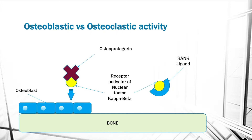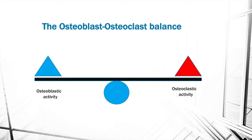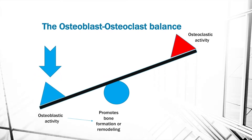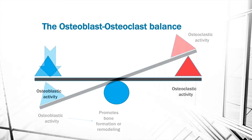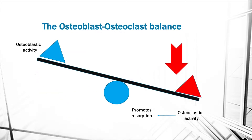On the other hand, when RANK binds to RANK ligand, this condition is pro-resorptive — osteoclasts get activated and resorb the bone. Bone health is maintained by the osteoblast-osteoclast balance. Increased osteoblastic activity results in bone formation, while increased osteoclastic activity results in resorption. A long-standing imbalance between osteoblasts and osteoclasts is responsible for osteoporosis.